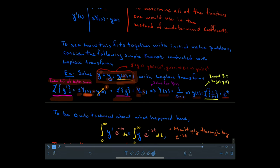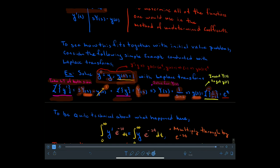Solving for capital Y(s): move the 1 to the right-hand side and collect the Y(s) terms. Factoring and dividing through gives Y(s) equal to 1 over (s minus 1). Now we invert: since 1 over (s minus a) corresponds to e to the at in the time domain, and here a equals 1, the solution is y(t) equals e to the t, as expected.